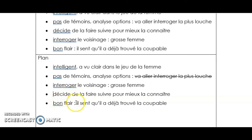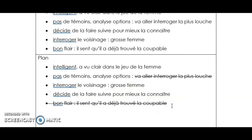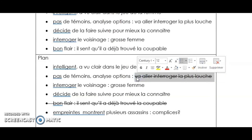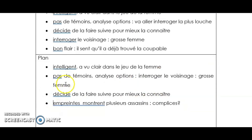OK. Bon, « Flair », il sent qu'il a déjà trouvé la coupable. Ah, mais ça, je pense que c'est pas bon. Parce que dans le texte, ça disait qu'il y avait des preuves évidentes qu'il y avait plus qu'une personne impliquée, à cause des traces de pas. Fait que si la femme a quelque chose à voir là-dedans, ben, elle est pas toute seule, c'est sûr. Donc, je pense que je vais rajouter quelque chose : l'empreinte montre plusieurs assassins. Dans le fond, on se demande c'est qui les complices de la femme. Ça, je l'enlève — je pense que c'est pas bon. Donc, c'est ce que je garderais de mes idées pour écrire mon texte.